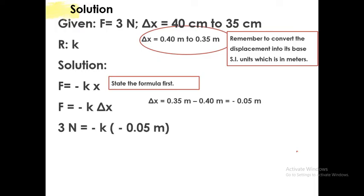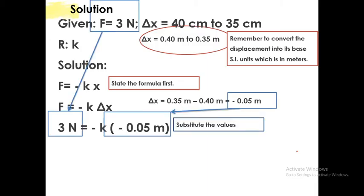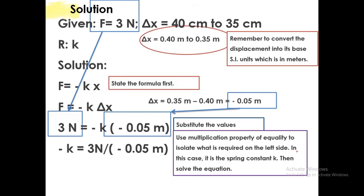We will now substitute the values. Force is 3 newtons, displacement is negative 0.05 meters. To solve for k, you simply divide using multiplication property of equality. Negative k can be solved by dividing 3 newtons by negative 0.05 meters, and you will get an answer of negative 60 newtons per meter. Don't forget to box or encircle your final answer. Did you get it? If this is too fast for you, just pause, slow down, rewind the video until you get each step.